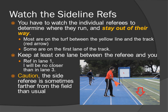Watch the sideline refs. You have to watch the individual referees to determine where they run and stay out of their way. Most are on the turf between the yellow line and the track. I normally keep at least one lane between the referee and me — for example, if the referee is in lane 1, I will be no closer than lane 3, leaving lane 2 as the buffer. Caution: some referees run farther from the field than usual, sometimes veering into lane 3, which means I shoot from lane 5 to avoid the referee running into me.